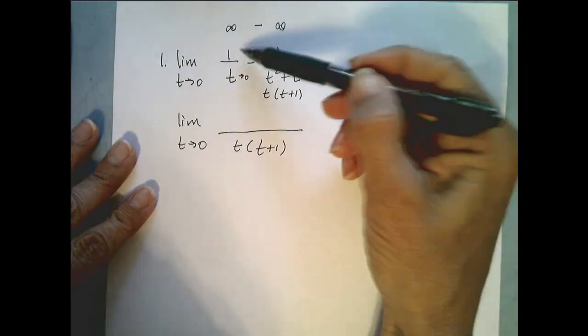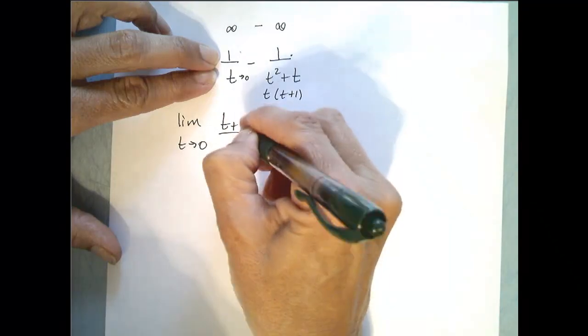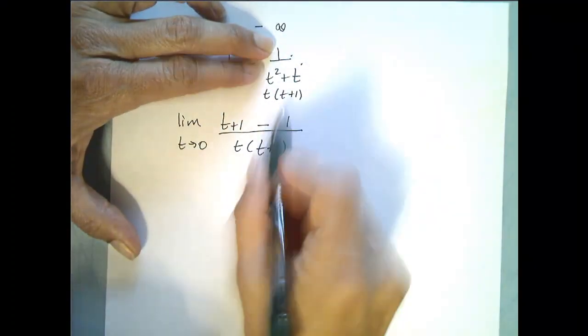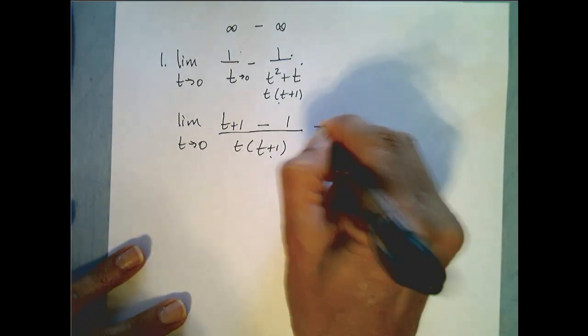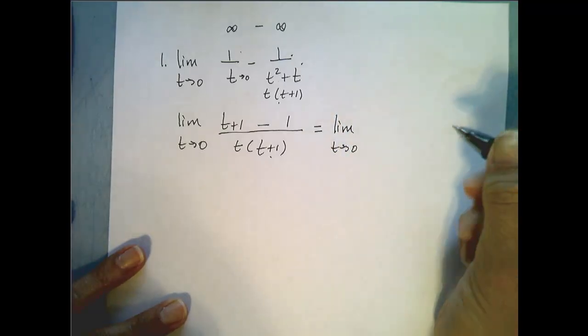And now we need to adjust our numerators so this one becomes t plus 1 minus and then this one just stays 1 because I didn't have to alter the denominator at all. Now that I have one fraction I'm going to simplify so the top just becomes t over t times t plus 1.